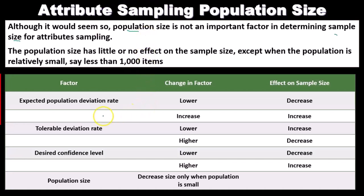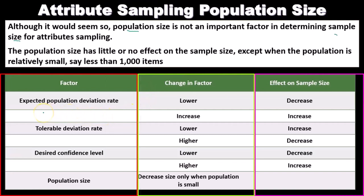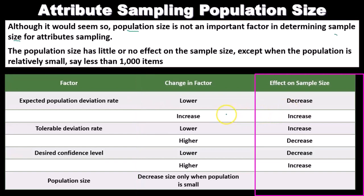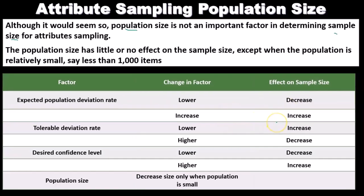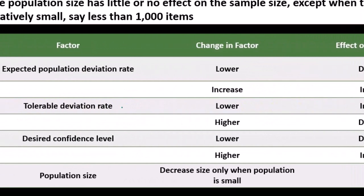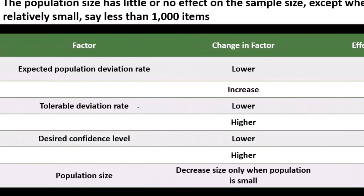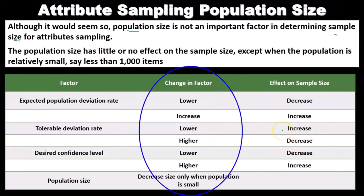Looking at the relationship table: if the expected population deviation rate decreases, the sample size decreases; if it increases, the sample size increases. For the tolerable deviation rate, there's an inverse relationship — if we want it to go lower, we increase the sample size; if we want it to go higher, we decrease the sample size.